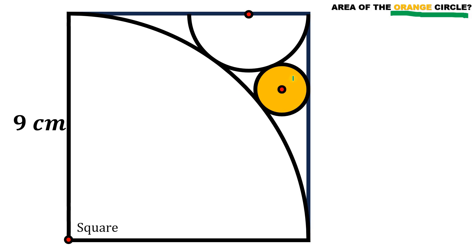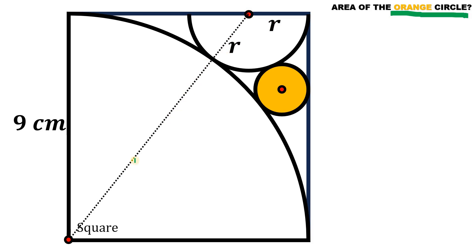Now first, to find the area of this circle, we need to find the radius of this semicircle. So let's call this R. Now let's connect these two centers. We know this is also the radius R. We also know the radius of this quarter circle — this is the side of the square, which is equal to 9. Using this right triangle, we can find the value of R, because this length is just 9 minus R.